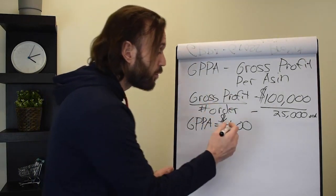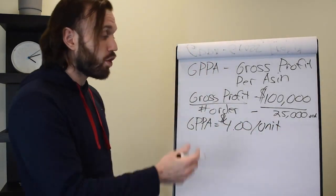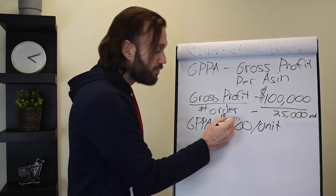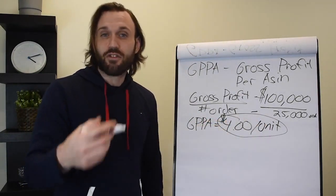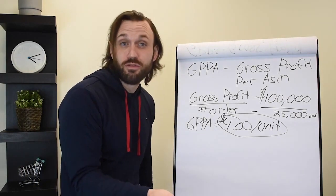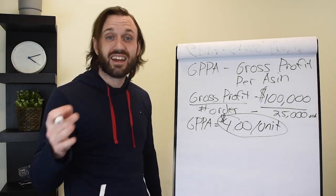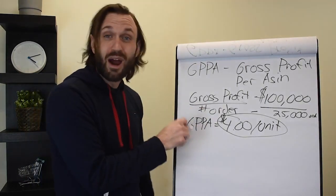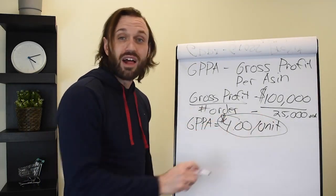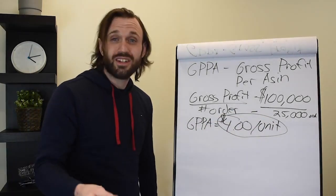This is an average. The gross profit per ASIN average is $4 per unit. So you are making in gross profits, before expenses, $4 a unit every time you sell a product. Some you may be making $8, some you may be losing $4, some you may be only making $1.50, others you could be making $6. But your average gross profit per ASIN is $4 a unit.